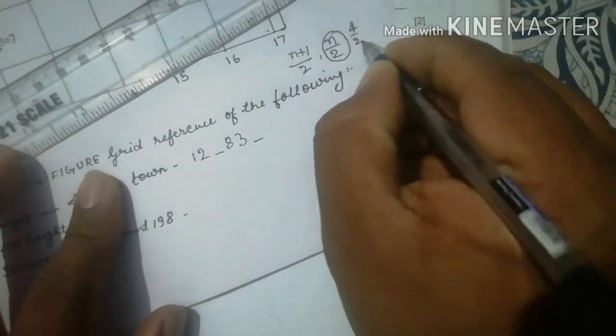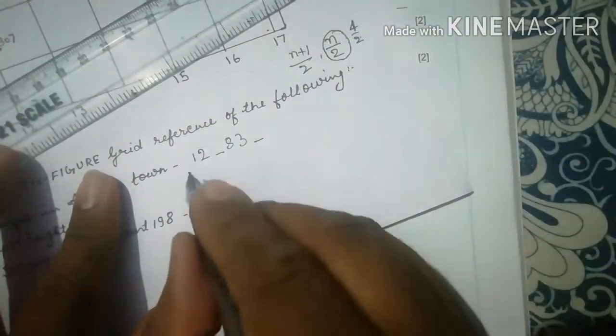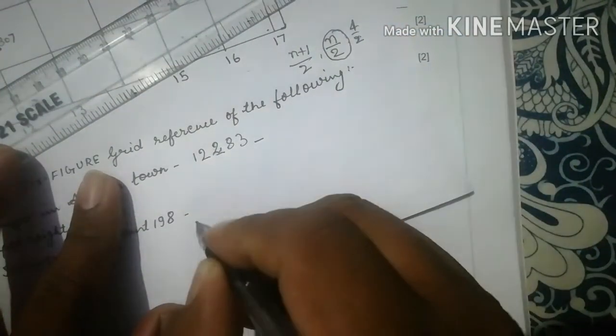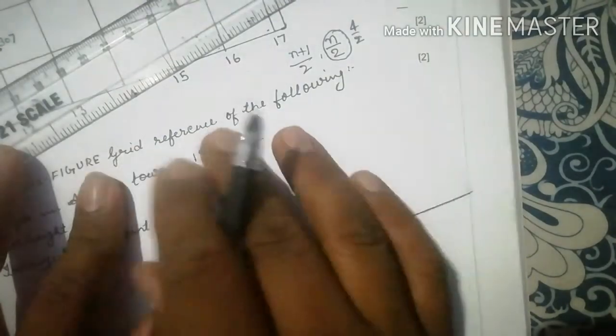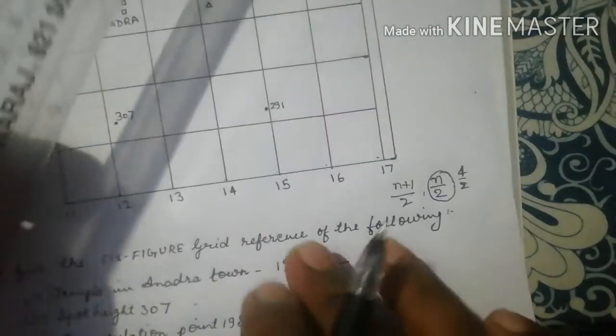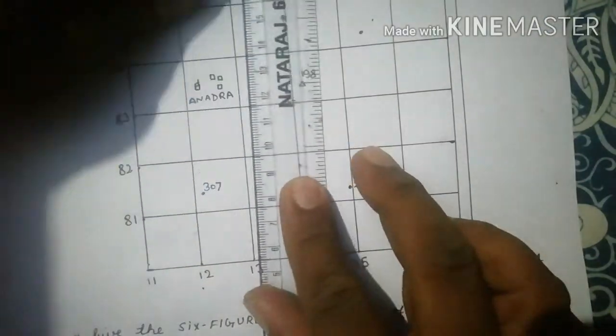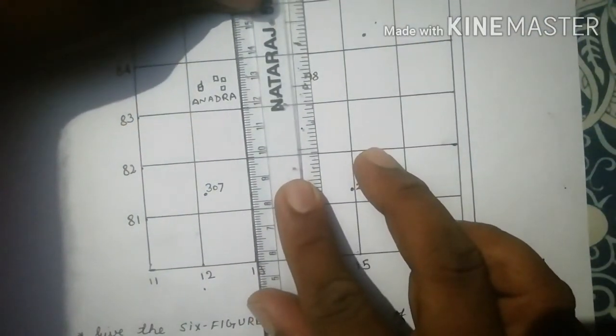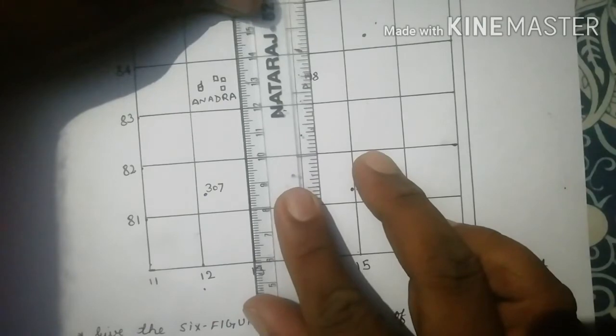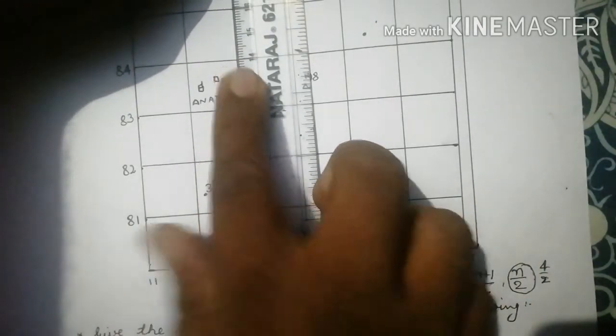For the next figure, you need to keep your scale like this. Mind you, we need to keep the scale like this, from 12 to 14. You can easily see 12 to 14, it's 2 centimeters.